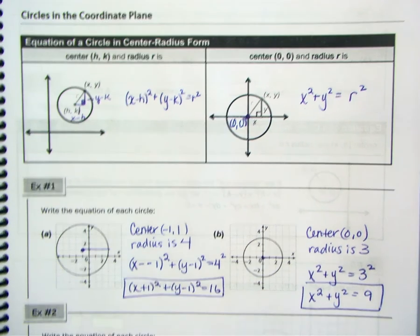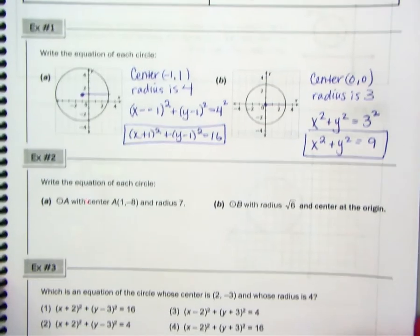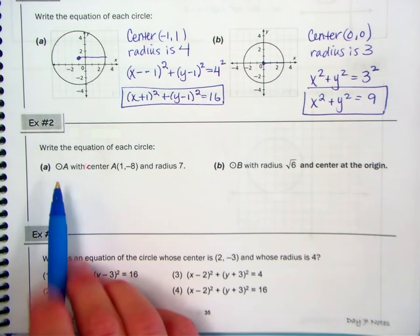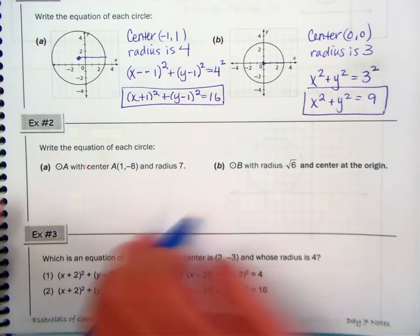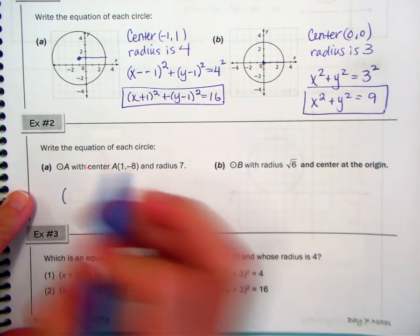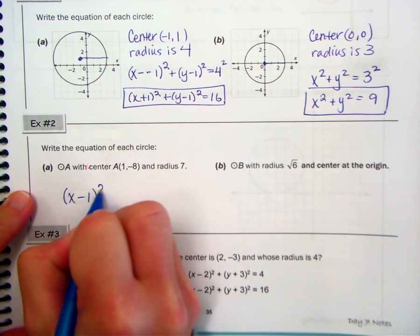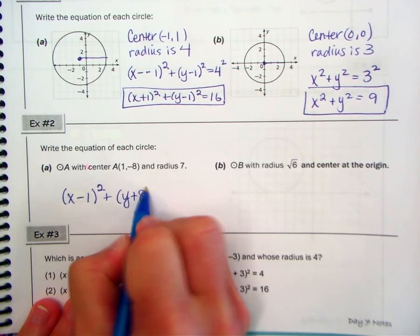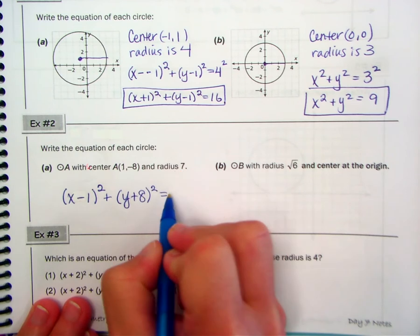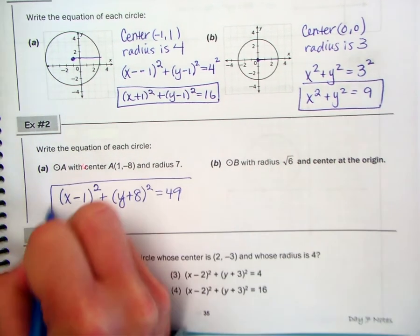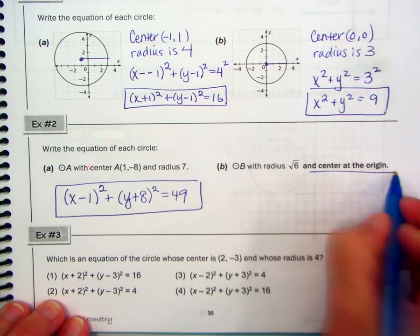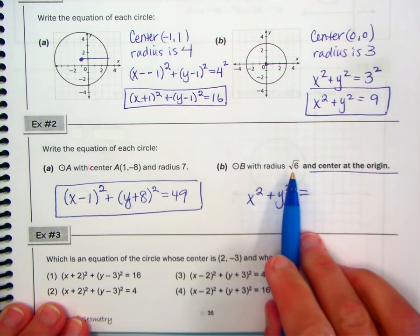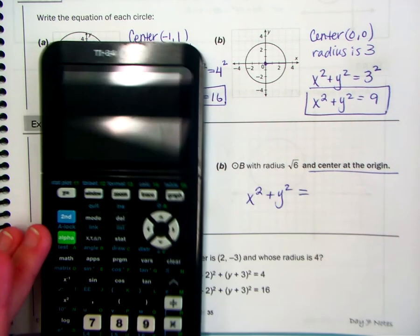Write the equation of each circle in number 2. Then there's a multiple choice question in number 3. For circle A, given center and radius: if the x-value of the center is positive 1, it's going to be x minus 1 squared — the sign is opposite. If the y-value is negative 8, it's y plus 8 squared equals radius squared, and 7 squared is 49. When the center is at the origin, it's just x² + y², and then radical 6 squared.